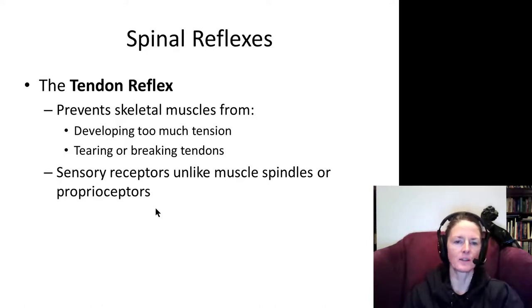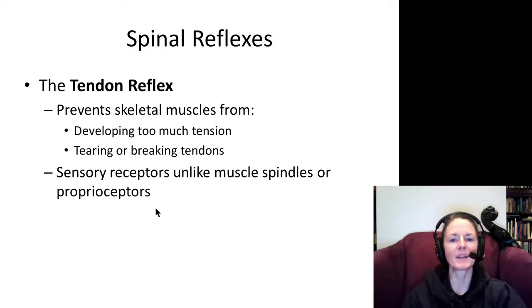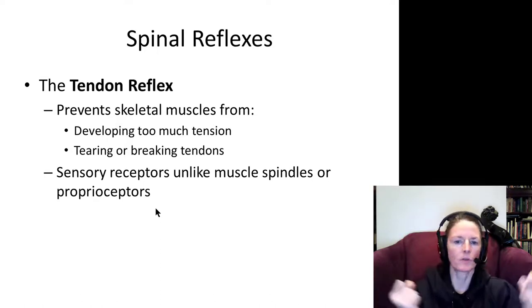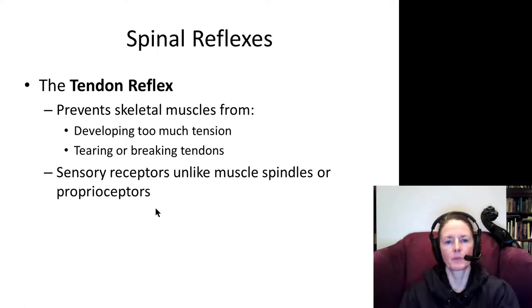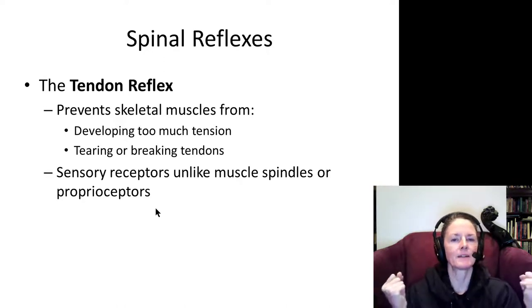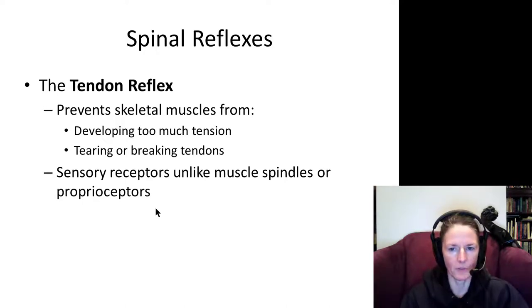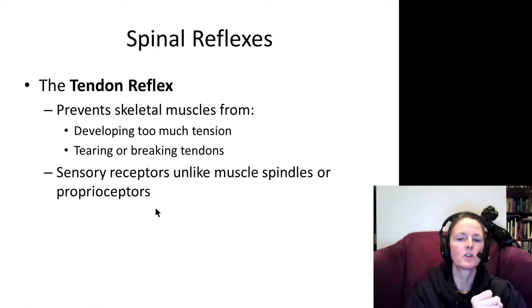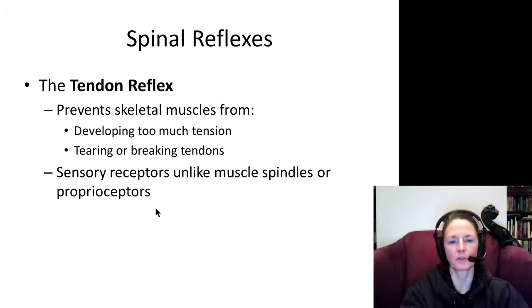There is another type of reflex called the tendon reflex, which is different from the stretch reflex. This prevents you from breaking or tearing tendons by developing too much muscle tension. For example, if you are doing biceps curls and putting too much tension on the muscles, about to break the tendon, the tendon reflex will relax the muscle. Unfortunately, many bodybuilders break their biceps tendons by overriding this reflex.